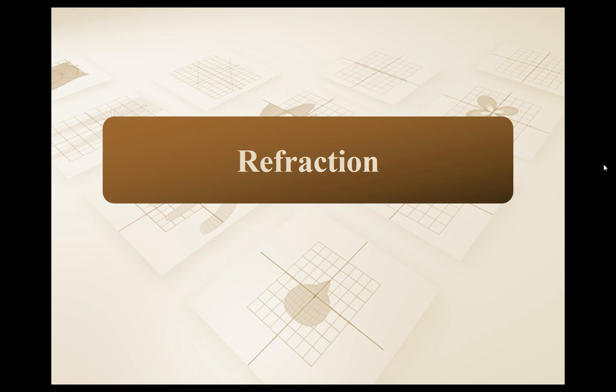Hello again Physics 20s. In today's lesson we are going to talk about a property of a wave referred to as refraction, and we've actually already talked a little bit about this. When we looked at some examples previously where we had a spring made of two materials and a wave pulse approached the medium change, part of the wave got reflected and part of it got transmitted. The part that gets transmitted — a more technically accurate word for what's happening is refraction — and we're going to look at this in a two-dimensional plane.